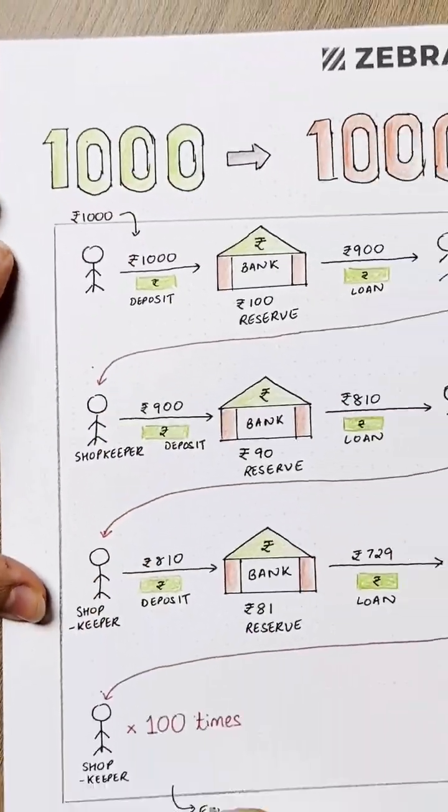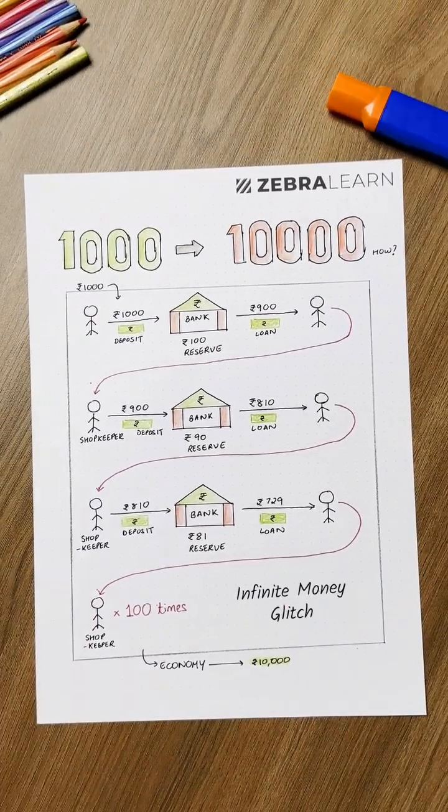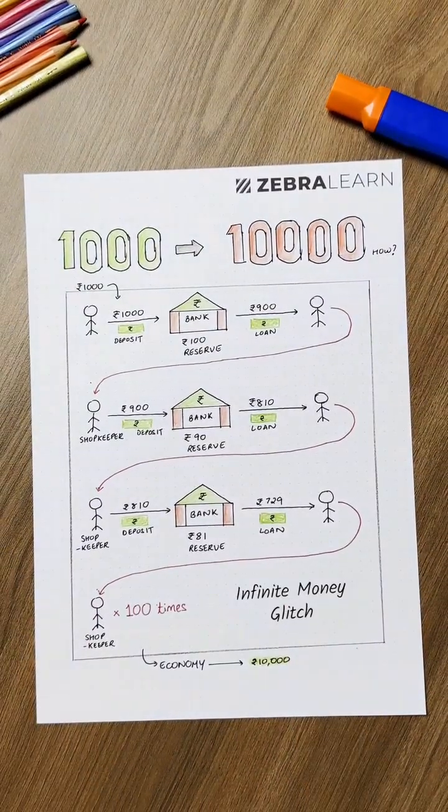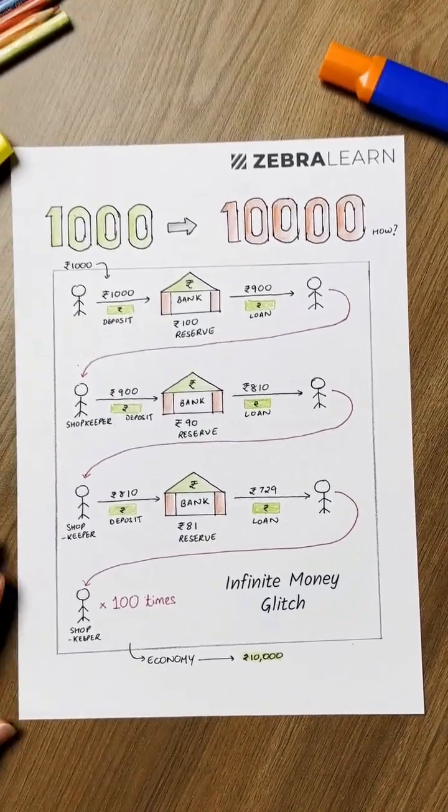The original 1000 has created 10,000 rupees in the economy. This is called the infinite money glitch. It's legal and this is how banking works. Banks have the power to fund any business in the economy. You're not just a customer, you're part of the entire financial system.